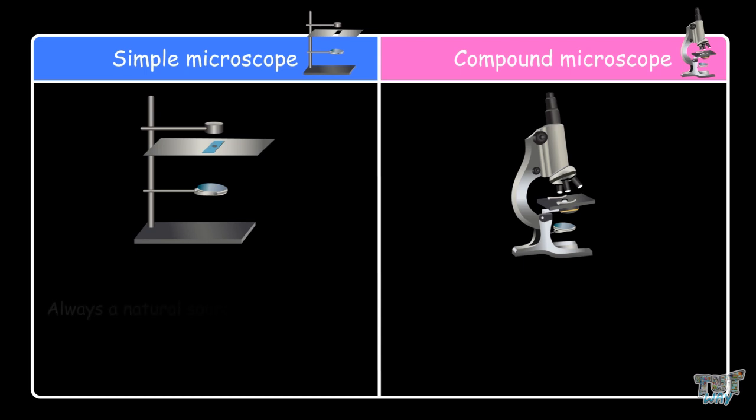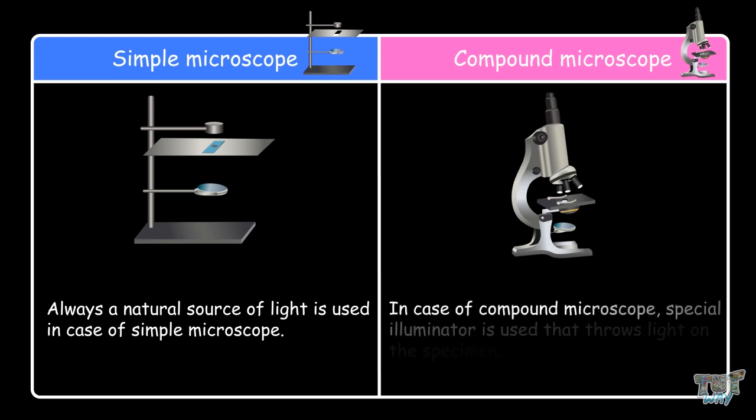For a simple microscope, you always need a natural source of light. And for a compound microscope, a special illuminator is used that throws light onto the specimen.